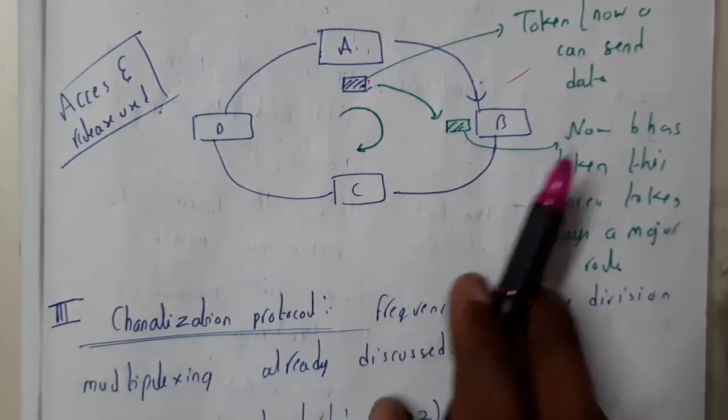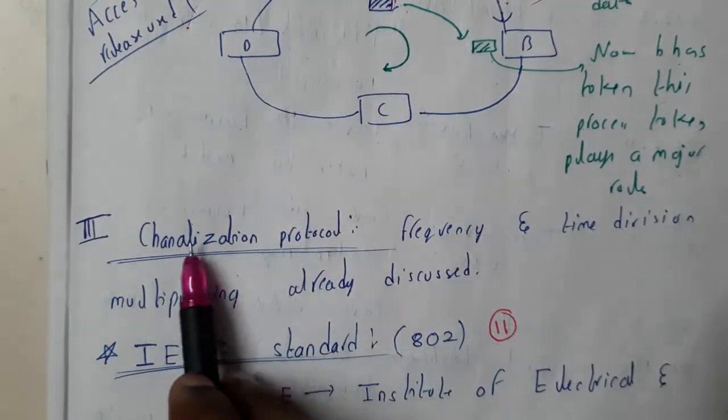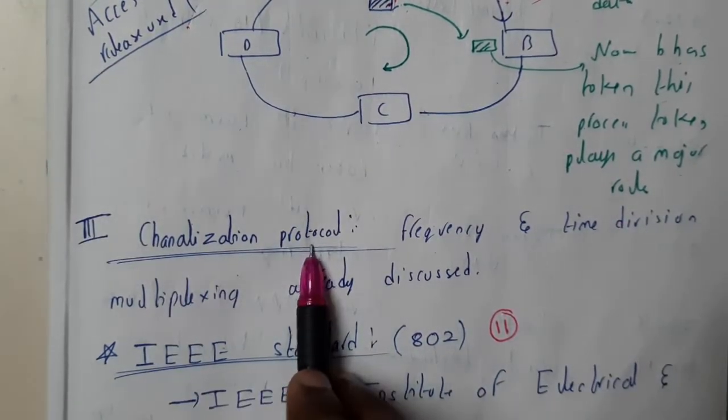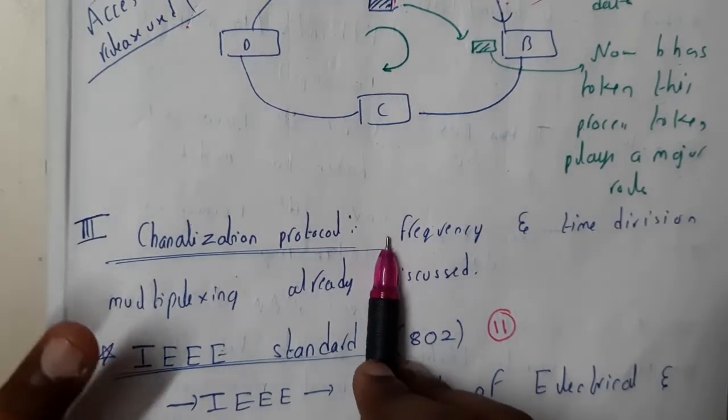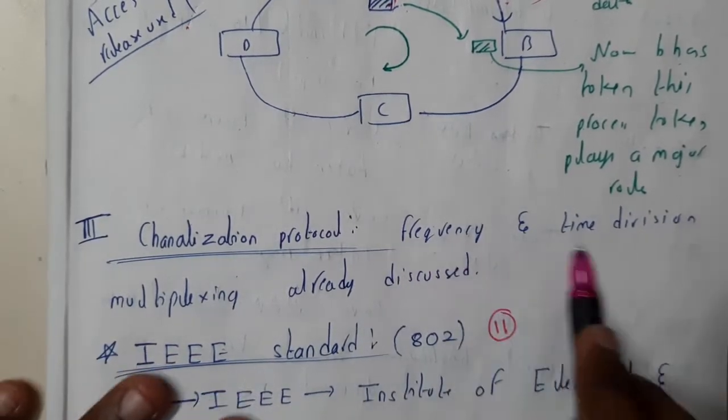The third type of protocols in MAC are nothing but channelized protocols, which we have already discussed clearly in the third unit. Those are nothing but frequency division multiplexing and time division multiplexing.